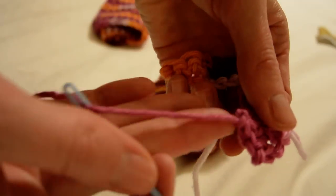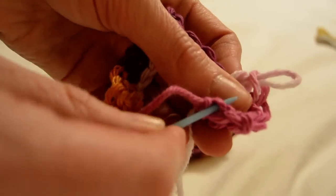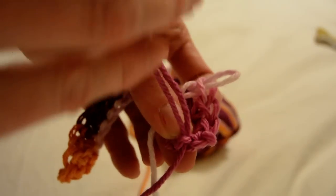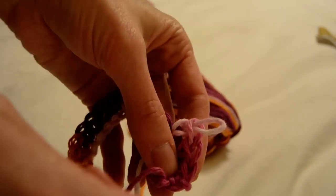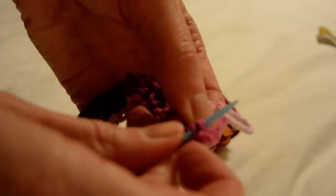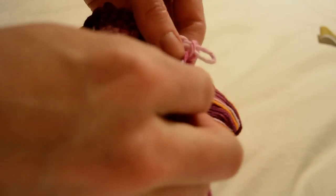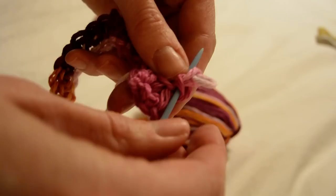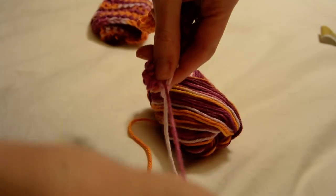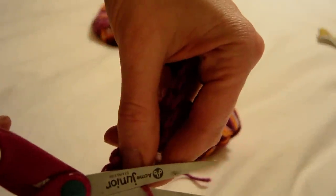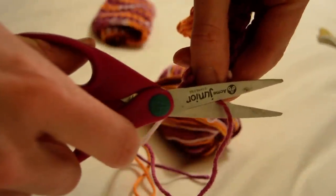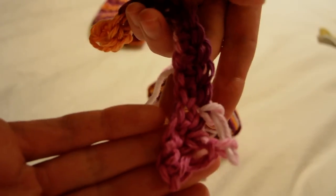I'm taking the wrong end, but you'll get the idea. So you have the tail, you're just going to weave it in and out, and cut it. Then you cannot see it at all.